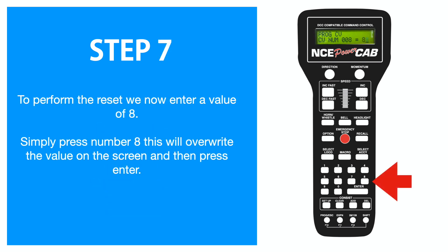Now to reset our Zimo decoder we need to enter the value of eight and press Enter. You may notice your loco perform a small shuffle when you've done this — that's a good sign. It's worth noting that most decoders use the value of eight to perform a reset, but not all of them do.